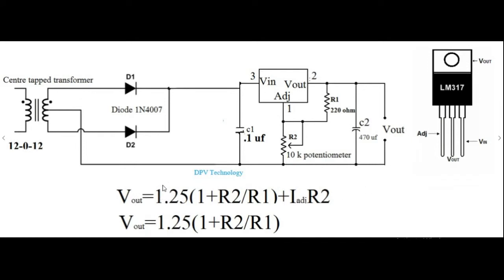Since adjustable current I_adjustable is very small, so we can neglect the term I_adjustable × R2. We are using R1 equal to 220 ohm. So from the formula we can see that if we increase the potentiometer value, that means R2 value, we will be able to get different voltage at the output.